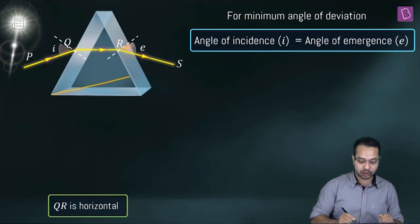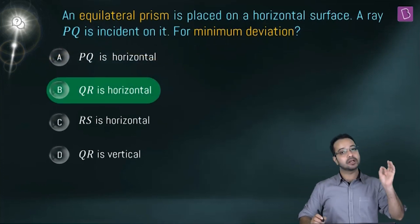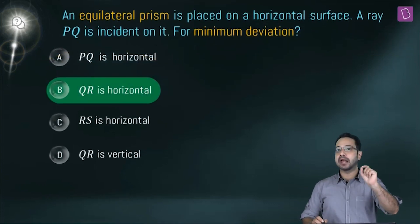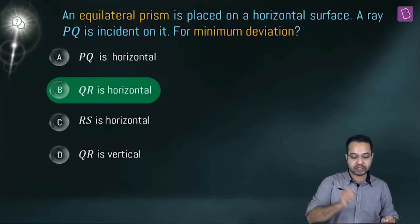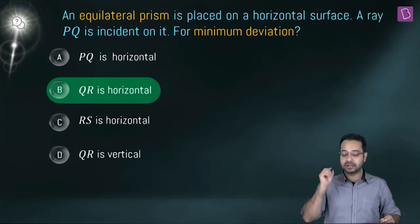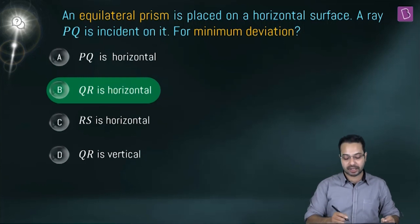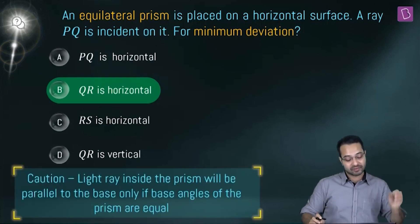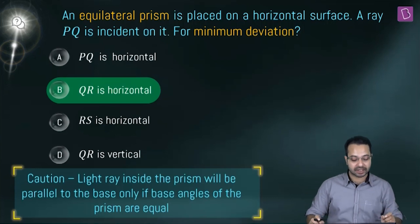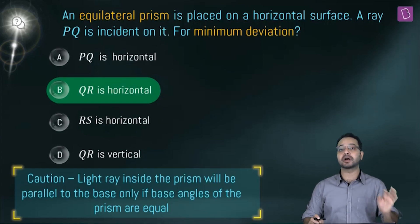QR is horizontal as per our question because it is an equilateral prism and hence the base angles are equal. So option B is going to be the correct option. A very important takeaway here is that the light ray inside the prism will be parallel to the base only if the base angles of the prism are equal.